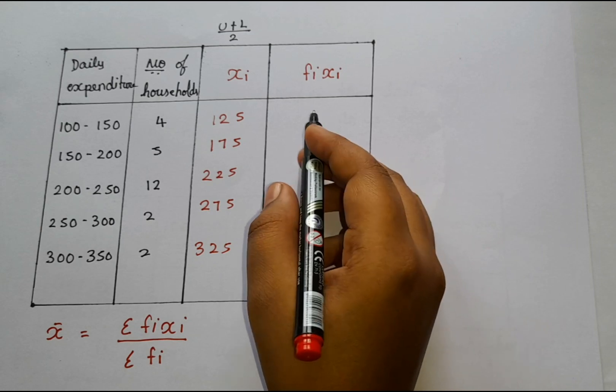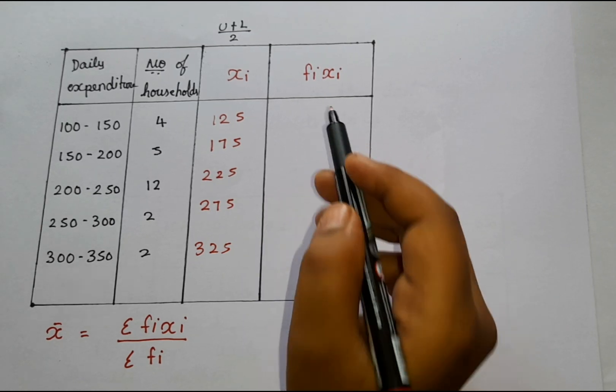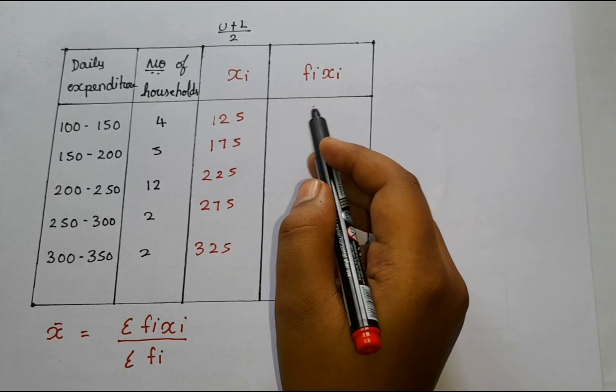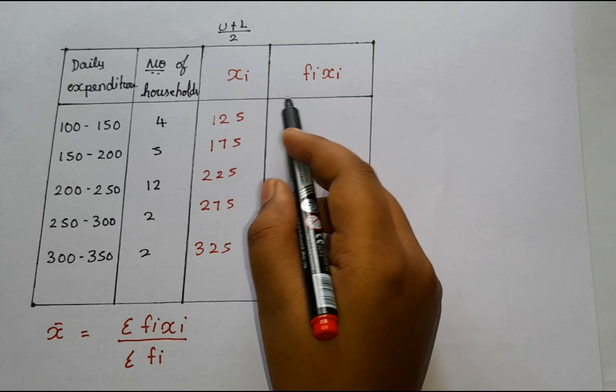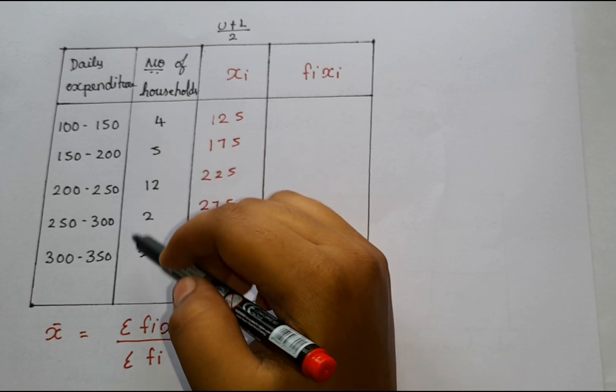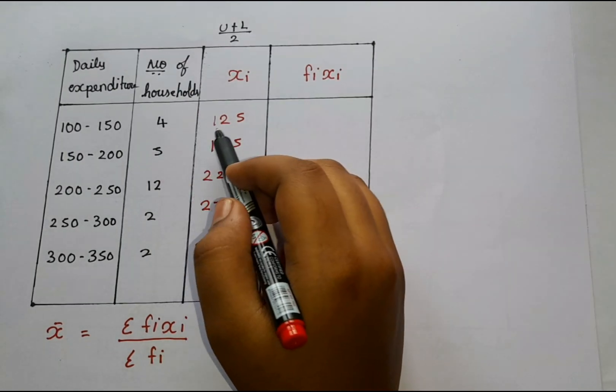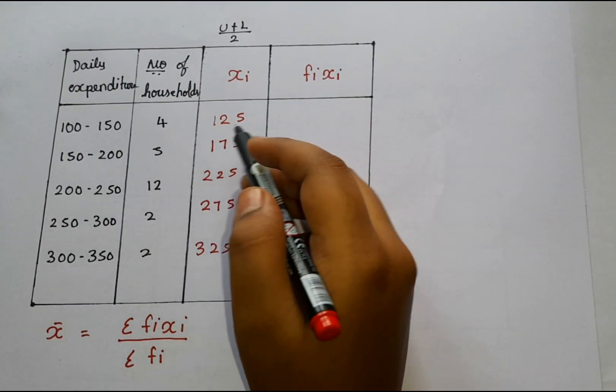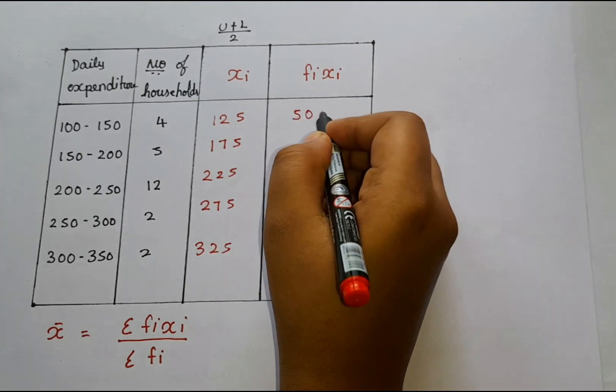Now we are supposed to find Fi Xi value. So here when you just check it out, here it is Fi into Xi. They are in multiplication. So we are supposed to multiply Fi. These are the Fi. So 4 into 125, 4 into 125 is 500.